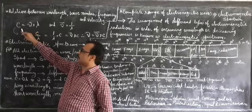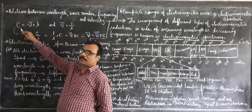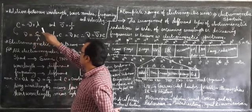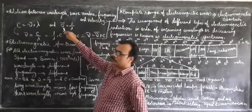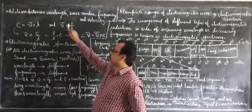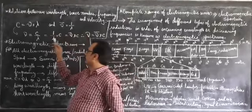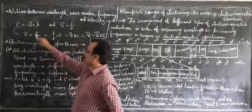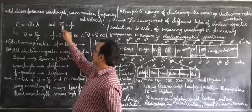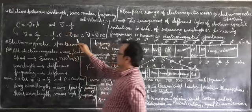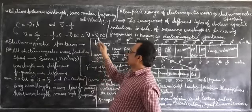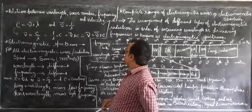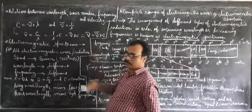The relation established is c = μλ, where c is the velocity of electromagnetic radiation, μ is the frequency, and λ is the wavelength. Another relation is that wave number ν̃ = 1/λ. Combining these two relations, we get frequency μ = c × ν̃, meaning frequency equals wave number times velocity. These relationships are used in numericals.